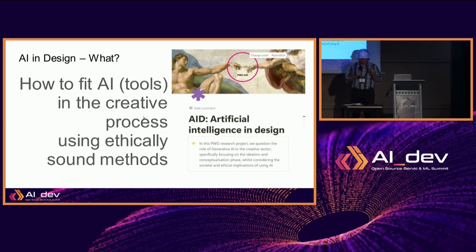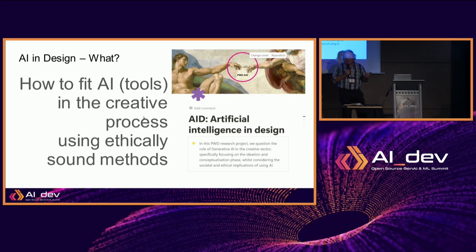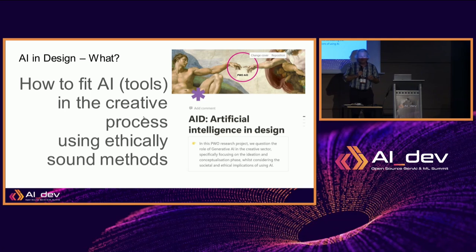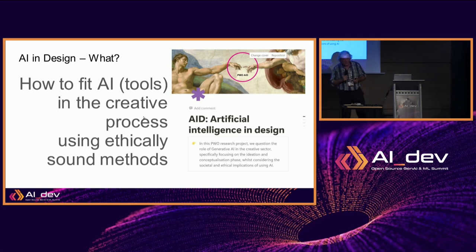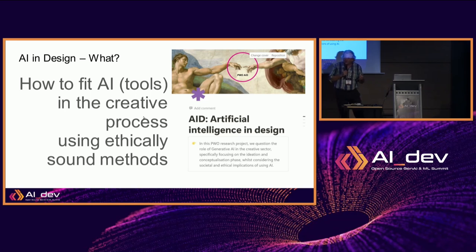Why is that important? AI is something that creatives can't avoid anymore — if they're not using AI, they're getting behind. So they have to use AI, and if we want AI to be sustainable and ethically sound, there has to be a method where we can integrate the methods creative people use in an ethical way, so that they just have an extra tool they are used to.